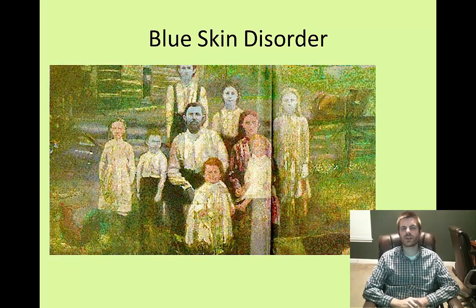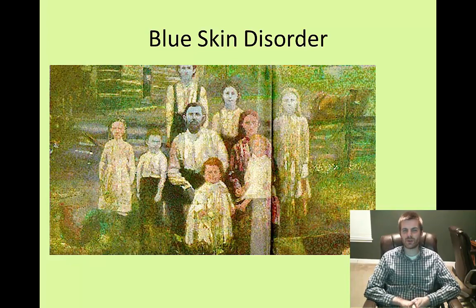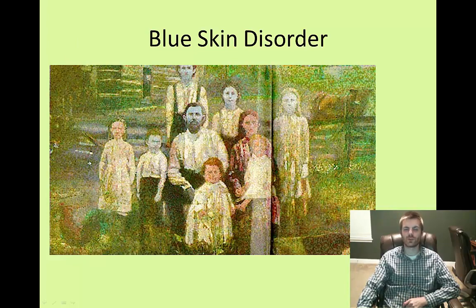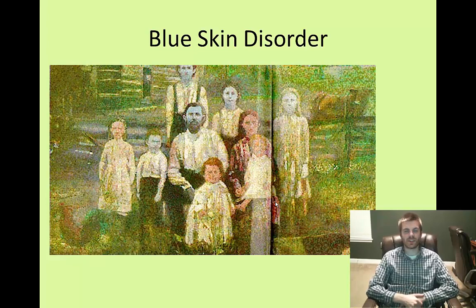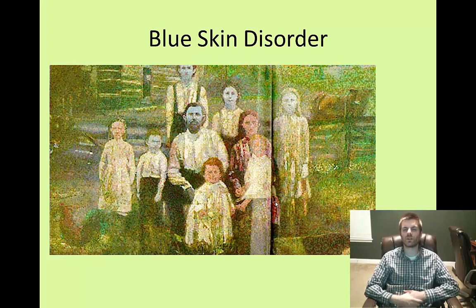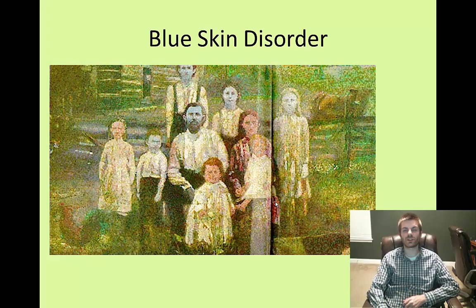Another example is the blue skin disorder, although this one has been debated quite a bit. Looking at the photo, some of the family members appear blue while others appear white, suggesting the husband had the blue skin disorder and the wife did not, with some children appearing normal and some not. There was also a man deemed the blue Santa Claus whose skin turned blue as a result of ingesting silver that contaminated his drinking water over his lifetime — the silver bonded with his epidermis, causing his skin to turn blue and his hair to turn very silvery.